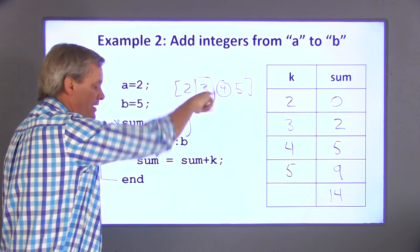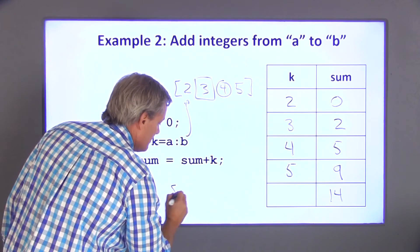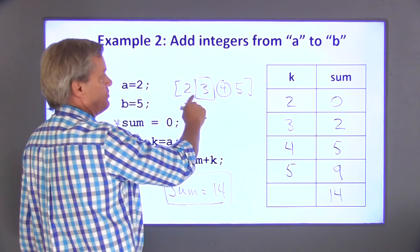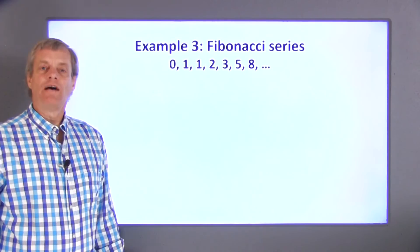That finishes all the values in this array. I'm done and the final value of sum is equal to 14, which is 2 plus 3 plus 4 plus 5.